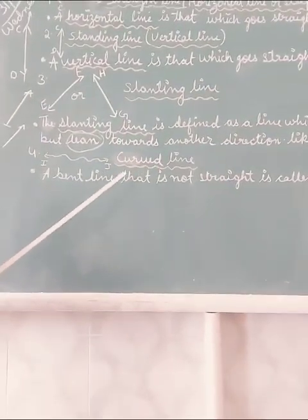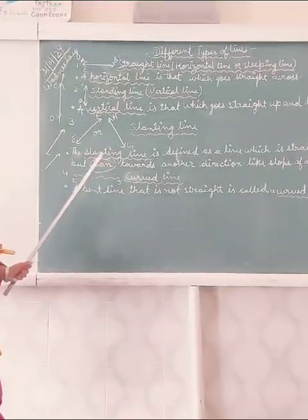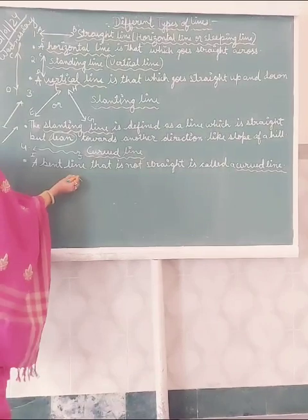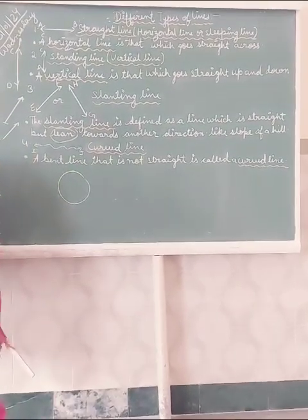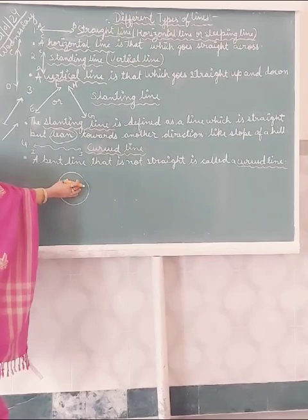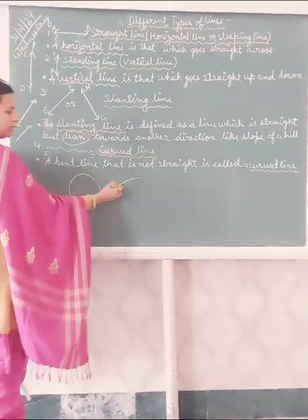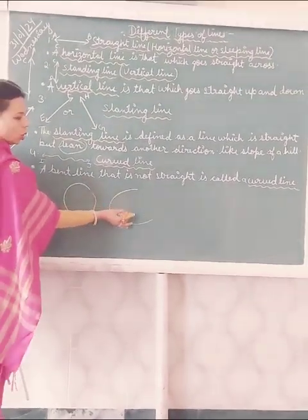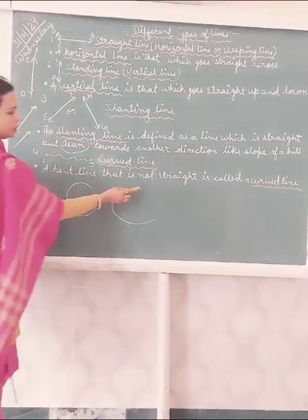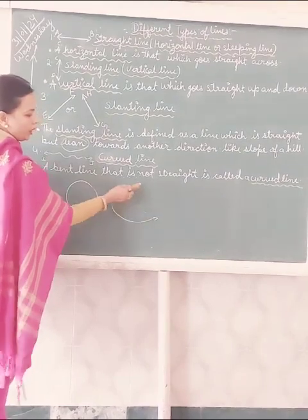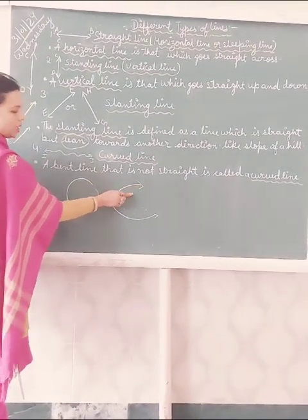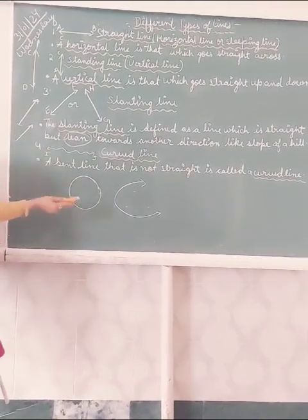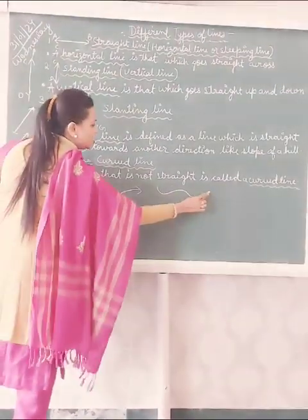Your fourth line is the curved line. A curved line can look like this, or like this — these are curved lines. When both points are closed, it is called a closed curved line. When the points are open, it is called an open curved line.